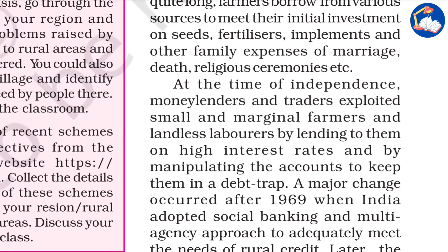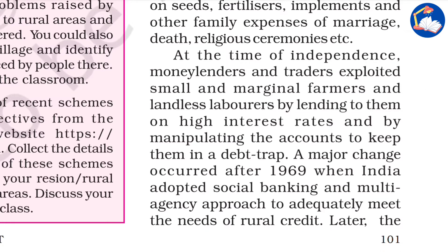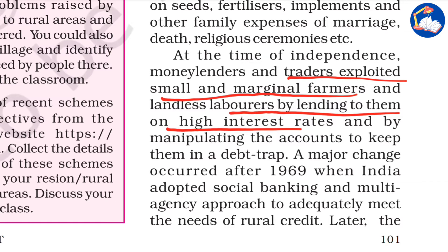At the time of independence, money lenders and traders exploited small and marginal farmers and landless laborers by lending at high interest rates and manipulating accounts to keep them in debt traps. Even after repaying the principal amount, they still had to pay interest. A change occurred after 1969 when India adopted social banking and a multi-agency approach, reflecting the increasing concept of socialism in government policy.